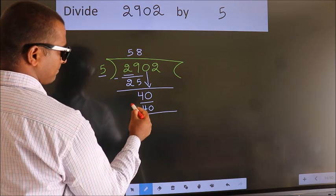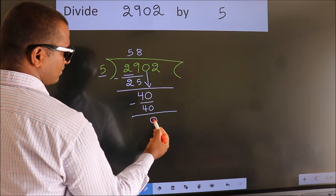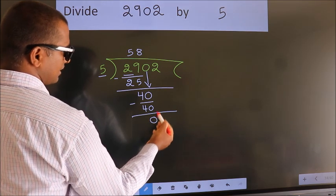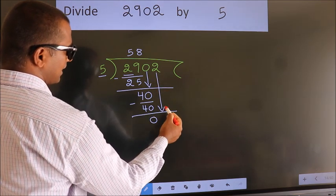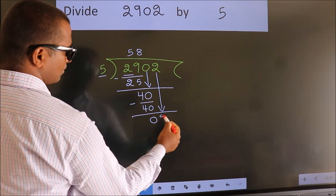Now we subtract and get 0. After this, bring down the beside number, so 2 down.